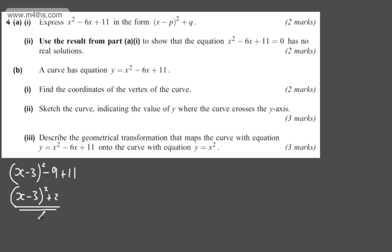In the second part, it says use the result from part a(i) to show that the equation x² - 6x + 11 = 0 has no real solutions. The question carries two marks.